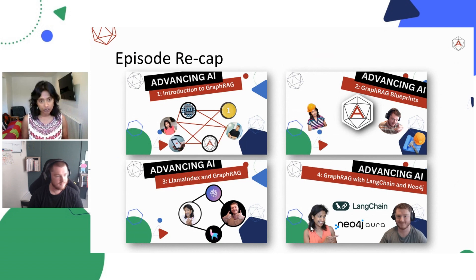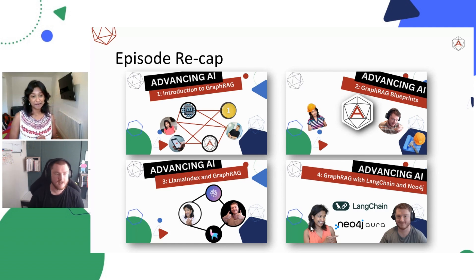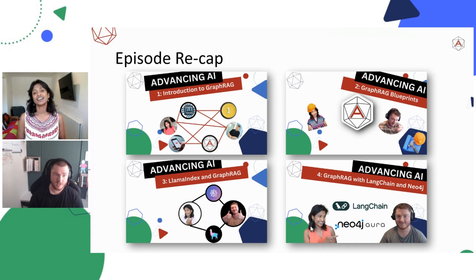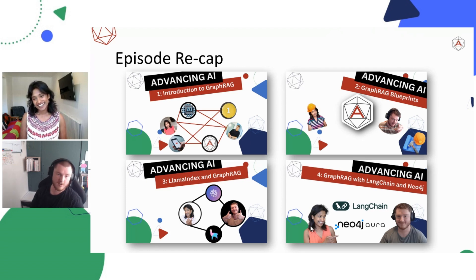We've done an introduction to GraphRAG where we touched on different terminologies. Episode 2, we looked at a high-level overview of the Blueprints architectures. Episode 3 was LlamaIndex Local Implementation and GraphRAG Local Implementation. And then in Episode 4, we wrapped up with a Local LangChain Implementation.